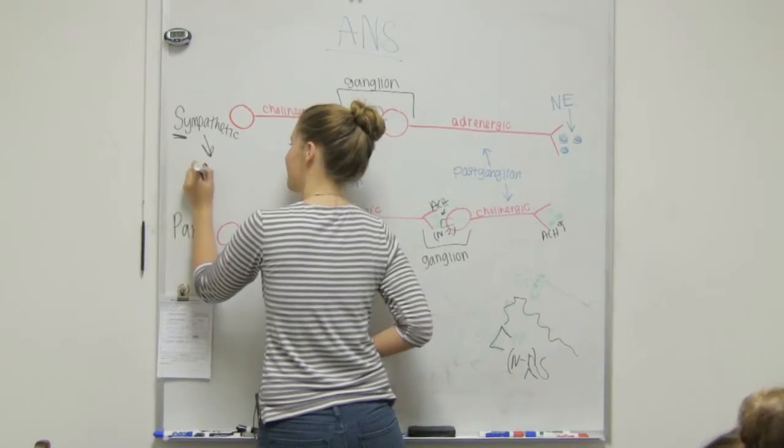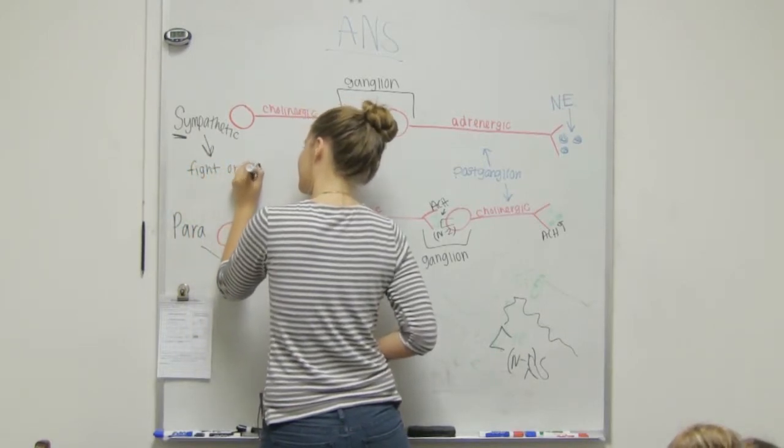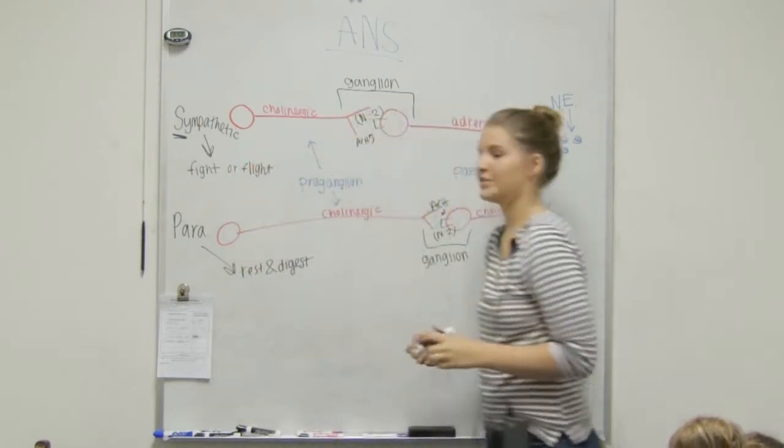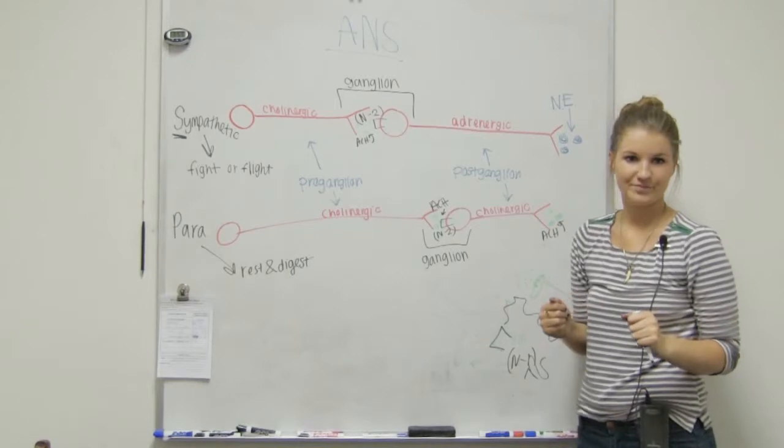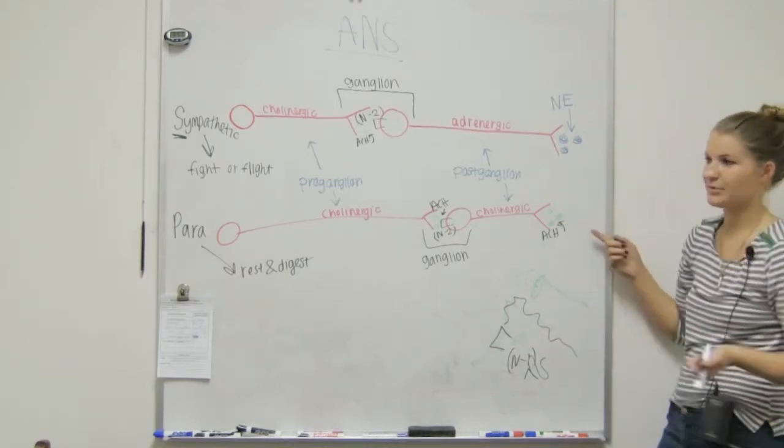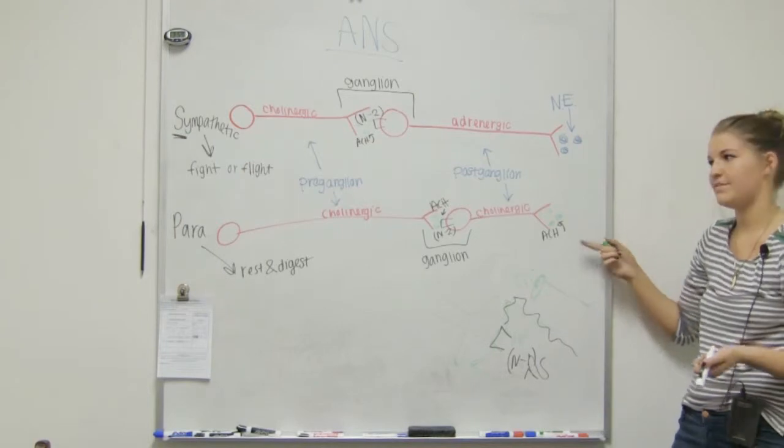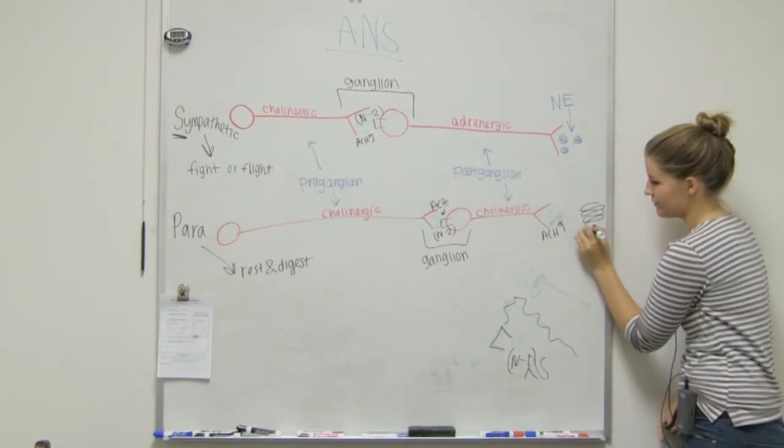Sympathetic now is? Fight or flight. Fight or flight. Awesome. So, if someone comes in here with a gun, we're going to go, okay, survival mode. So, these are our effectors. So, let's say, what's an example for an effector organ, maybe for rest and digest? Maybe our intestines?